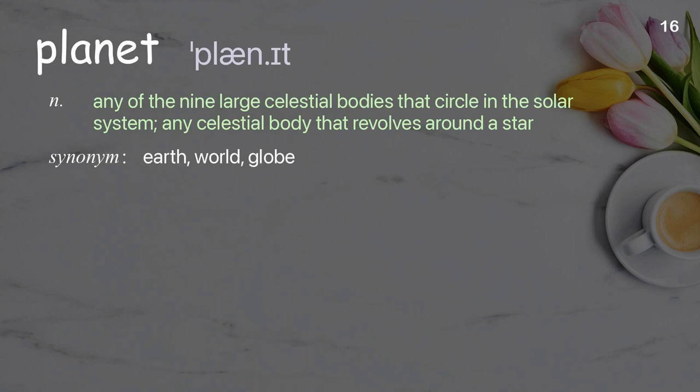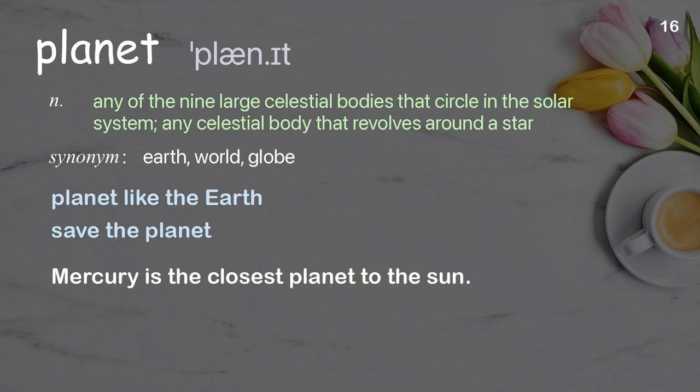Planet: any of the nine large celestial bodies that circle in the solar system; any celestial body that revolves around a star. Examples: planet like the earth, save the planet. Mercury is the closest planet to the sun.